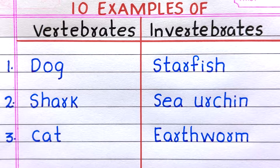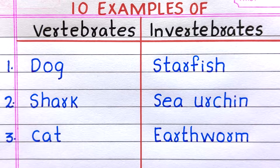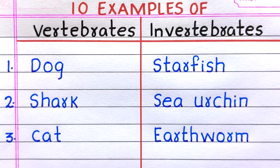First example of an invertebrate animal is starfish. Second, sea urchin. Third, earthworm.